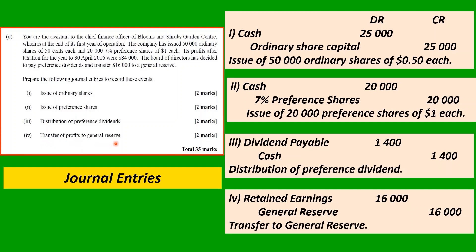For the transfer of profits to general reserve: debit Retained Earnings $16,000, credit General Reserve $16,000. Narrative: transfer to general reserve. The $16,000 is given. That is the last of the journal entries.